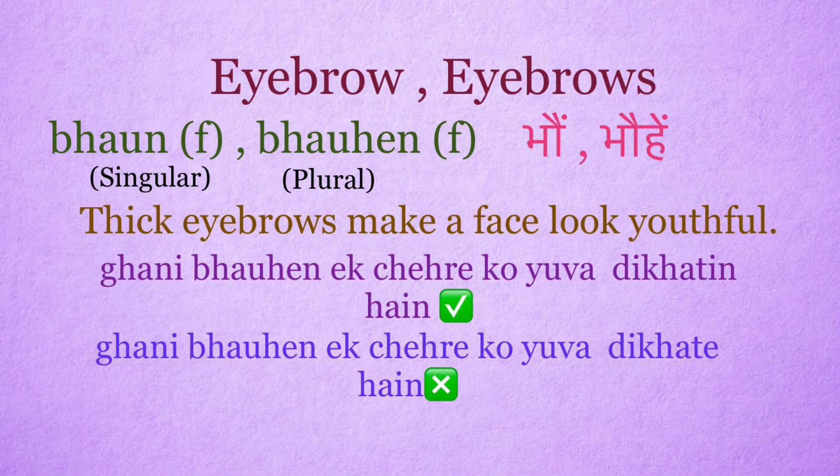Eyebrow: bhon. Eyebrows: bhonhen. It's a feminine word. Thick eyebrows make a face look youthful. Right sentence: Ghani bhonhen ek chehre ko yuvah dikhati hain. Wrong sentence uses incorrect masculine agreement.